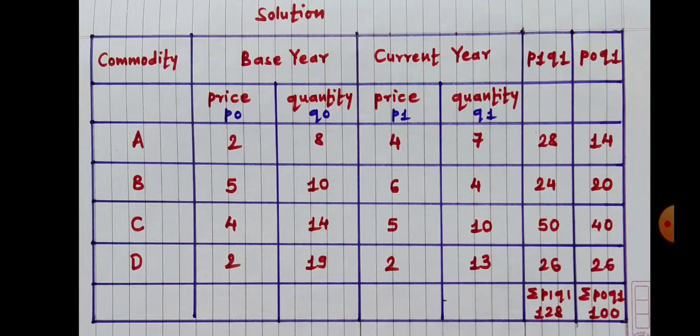In the last column, we have to find out P0Q1, i.e. P0 multiplied by Q1. 2 into 7 is 14; 5 into 4 is 20; 4 into 10 is 40; 2 into 13 is 26. After finding out P0Q1, we have to find out Sigma P0Q1, which is the summation of all P0Q1. So 14 plus 20 plus 40 plus 26, we get 100. Sigma P0Q1 is equal to 100.